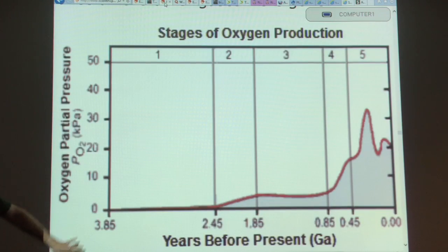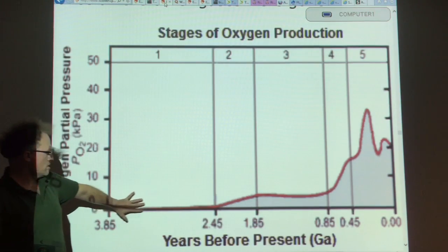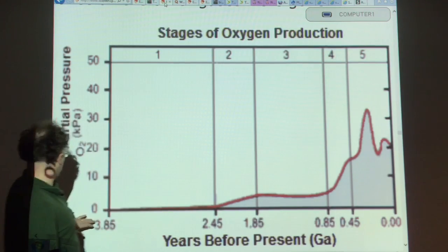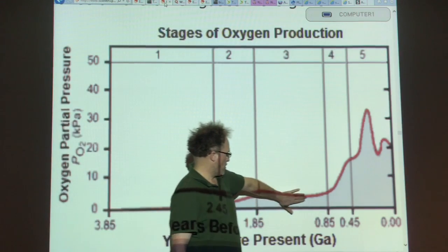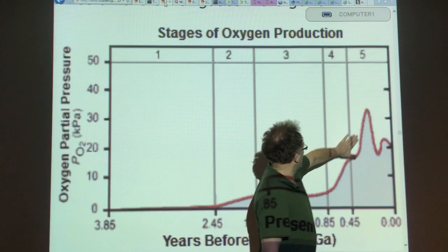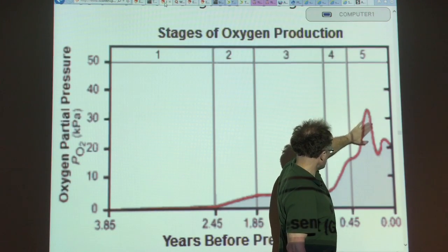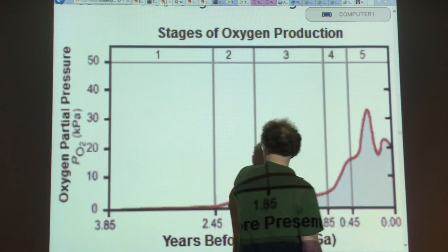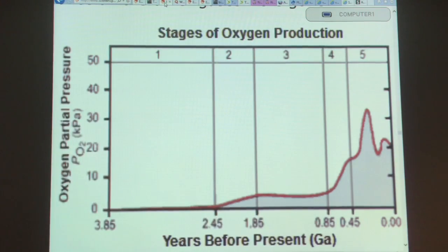Let's look at oxygen. Basically no oxygen until about 2.5 billion years ago. Then it started rising to the few percent level, about 3% or so, to 0.85 billion years ago. Then there was a sharp rise all the way up to about 35%. It dropped back down to about 15%, rose again, and it's at 21% today.